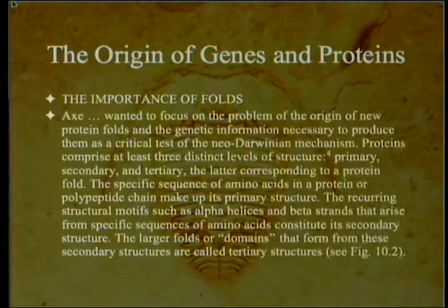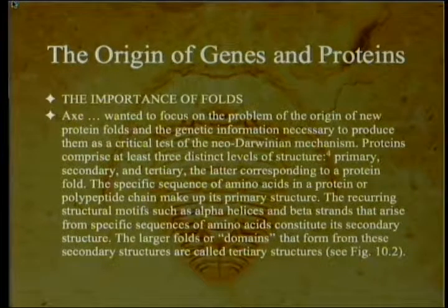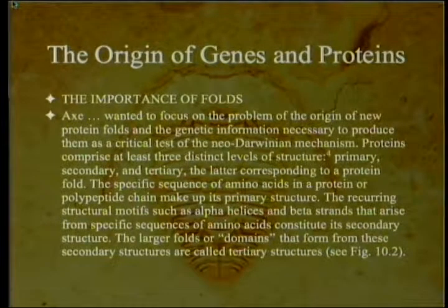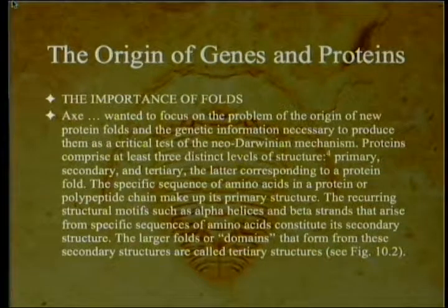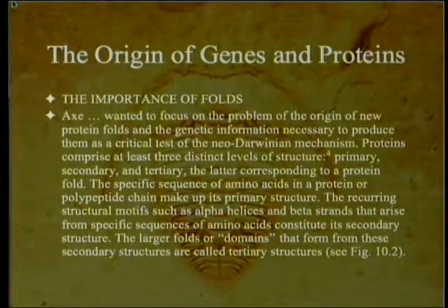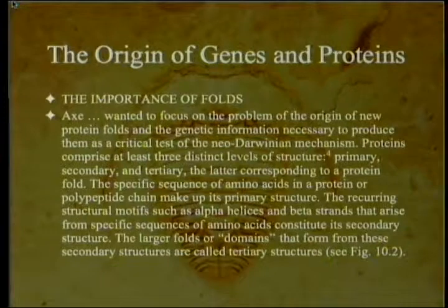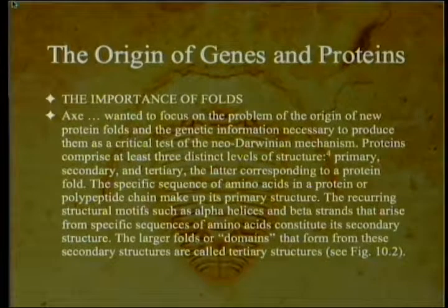The importance of folds: Axe wanted to focus on the origin of new protein folds and the genetic information necessary to produce them as a critical test of the neo-Darwinian mechanism. Proteins comprise at least three distinct levels of structure — primary, secondary, and tertiary — the latter corresponding to a protein fold. The specific sequence of amino acids makes up the primary structure. Recurring structural motifs such as alpha helices and beta strands constitute secondary structure. The larger folds or domains that form from these secondary structures are called tertiary structures.